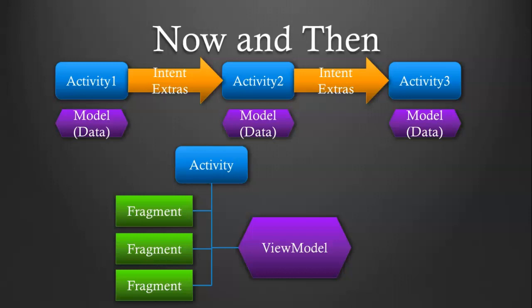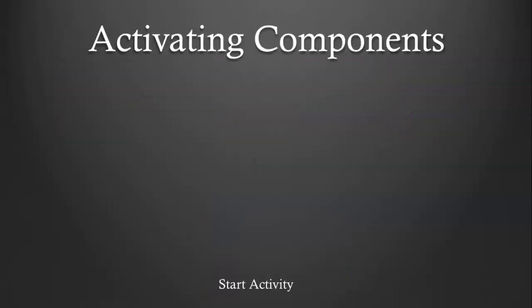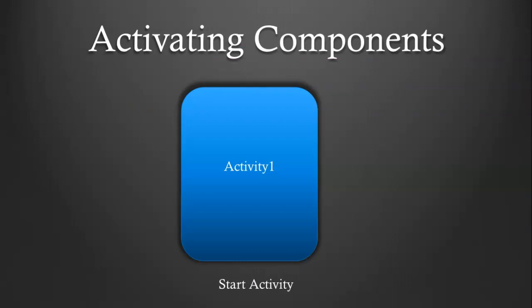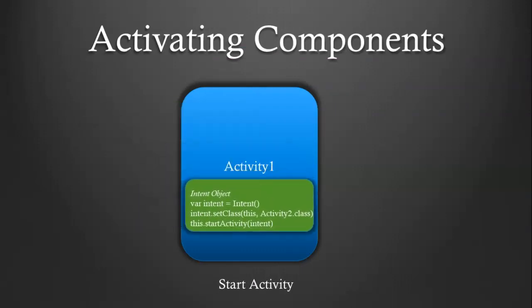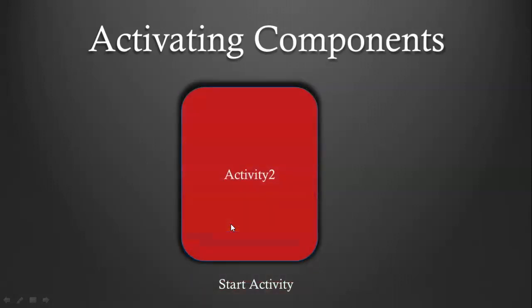Let's take a deeper dive look at how activities and intents work. Typically we start with an activity — activity one — and it makes a call. In this case we're making a call to an explicit intent because we're saying specifically that we want to go to the activity two class explicitly. So when we call start activity, what's going to happen is this new activity is going to appear, and that's what the user is going to see.